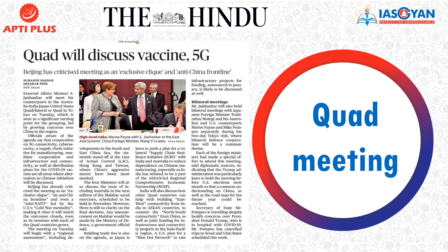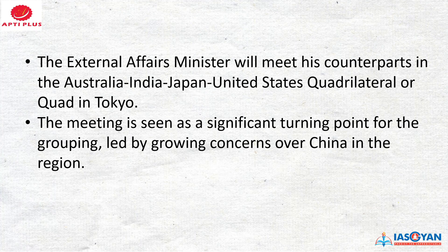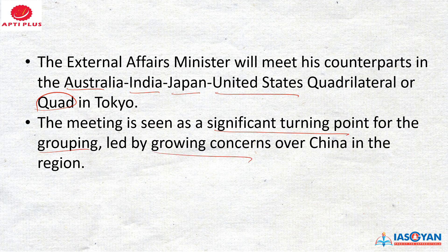The second topic is from the Hindu — Quad meeting. This is a very important news that has been continuously in the news. Quad is again important for the preliminary examination, and this type of news can also help in General Studies Paper 2 where international relations or summits are concerned. The External Affairs Minister will meet his counterparts of Australia, Japan, and the United States in a collateral meeting in Tokyo, also known as the Quad. The meeting is seen as a significant turning point for the grouping, led by growing concern over China's regional dominance.